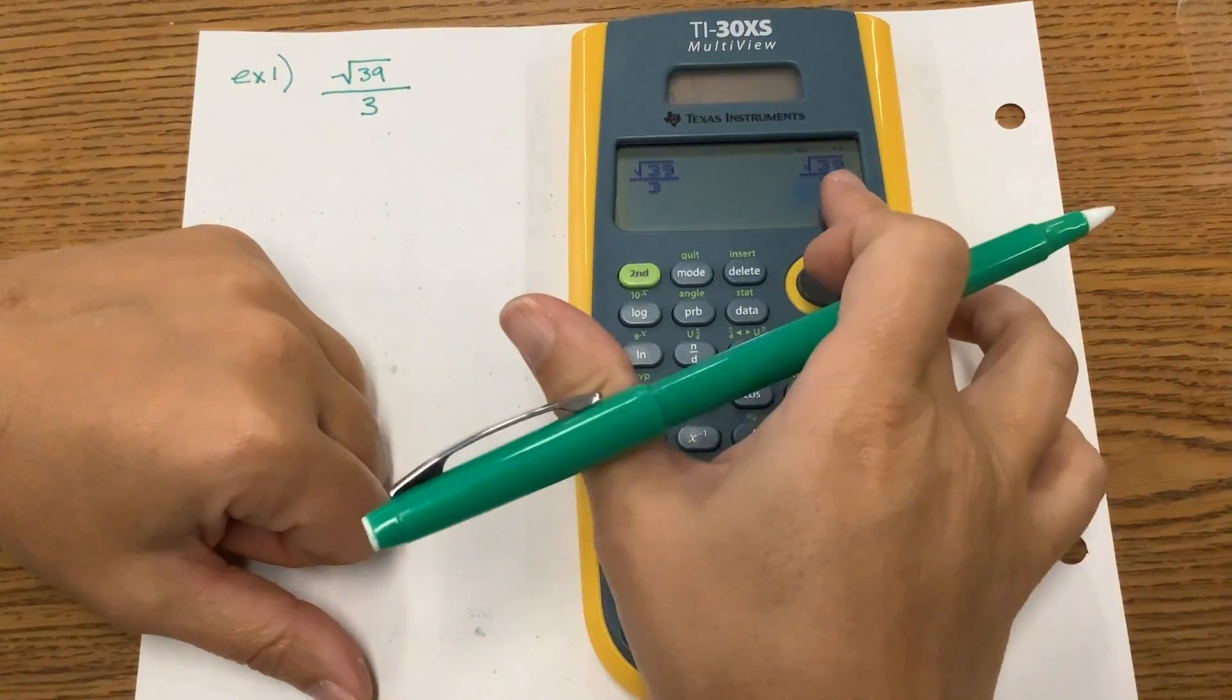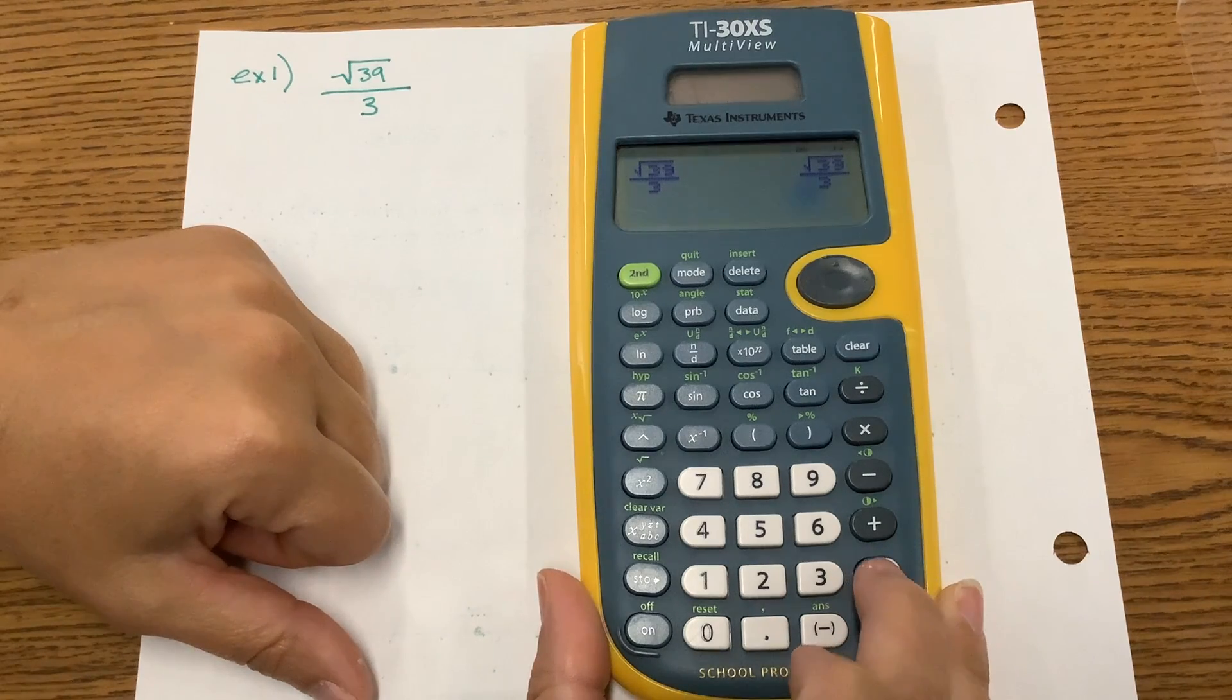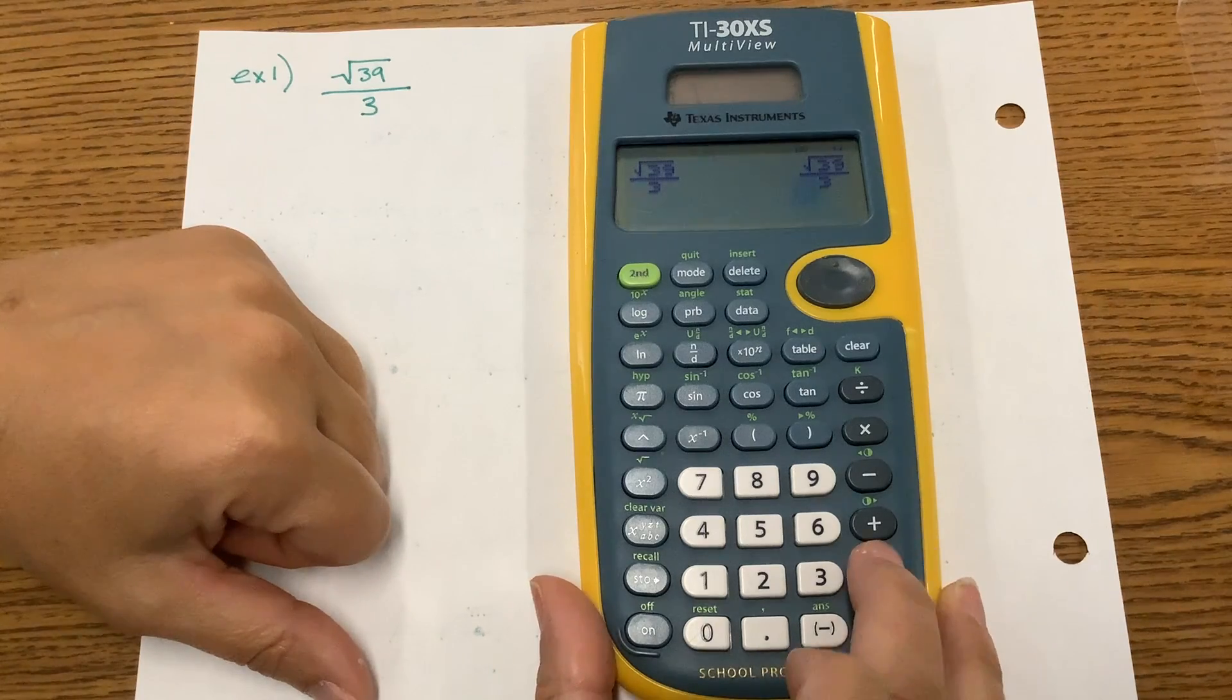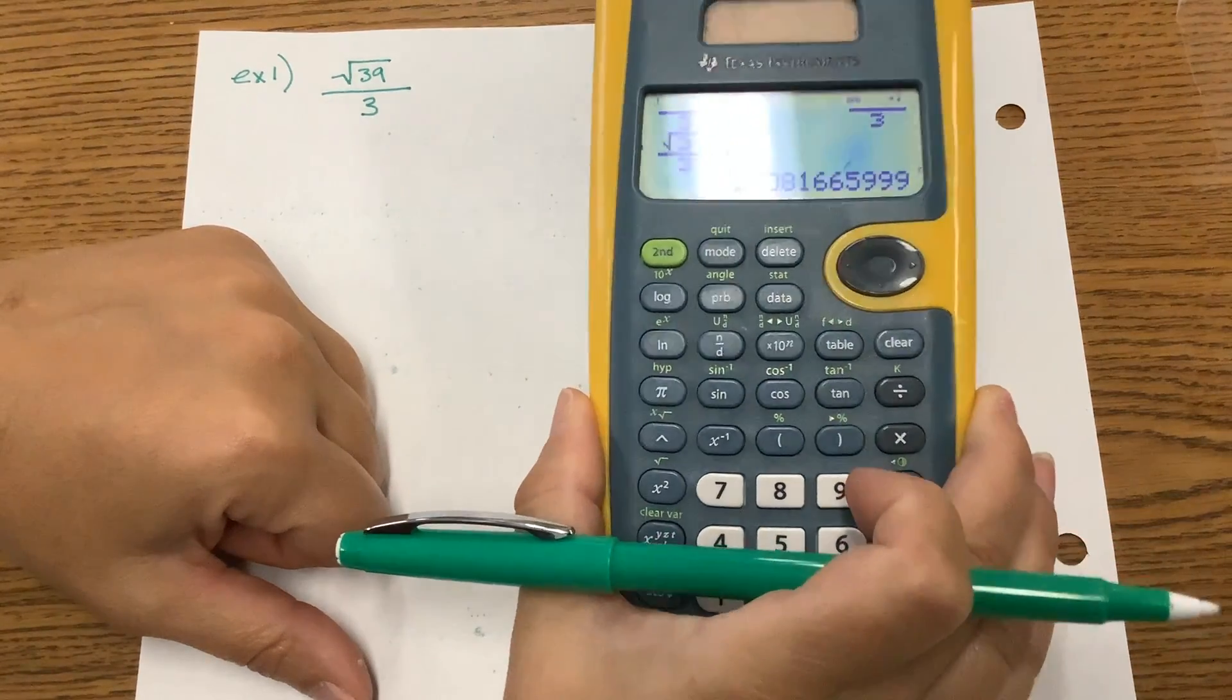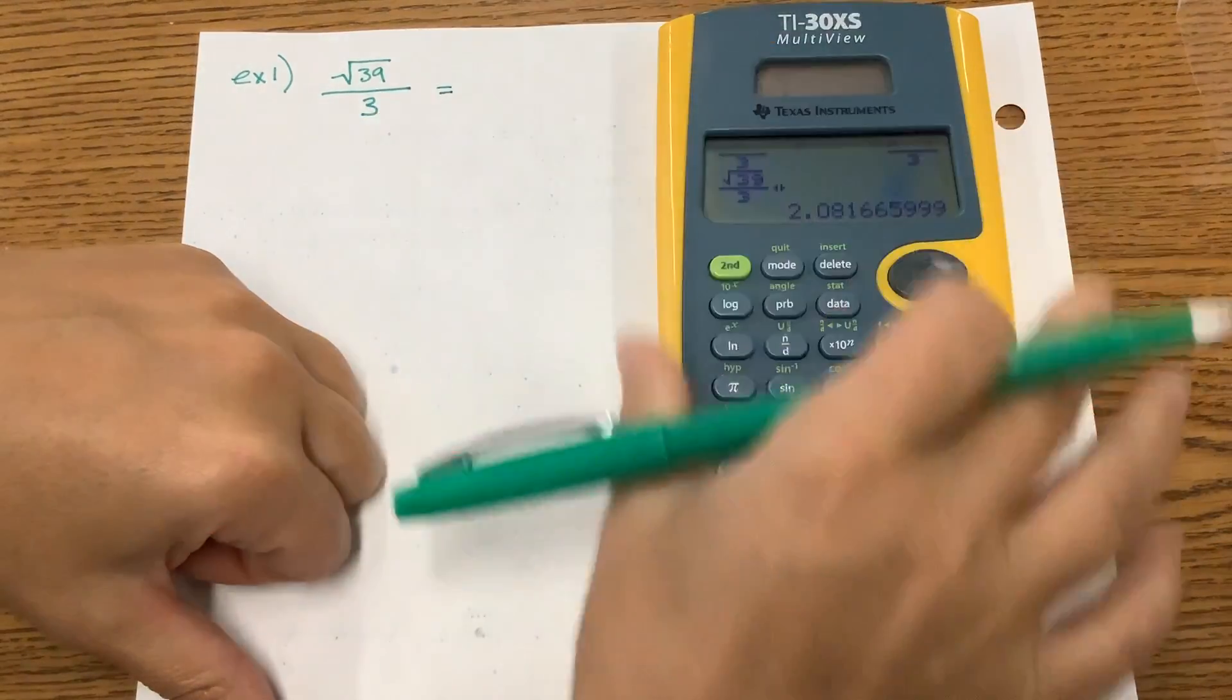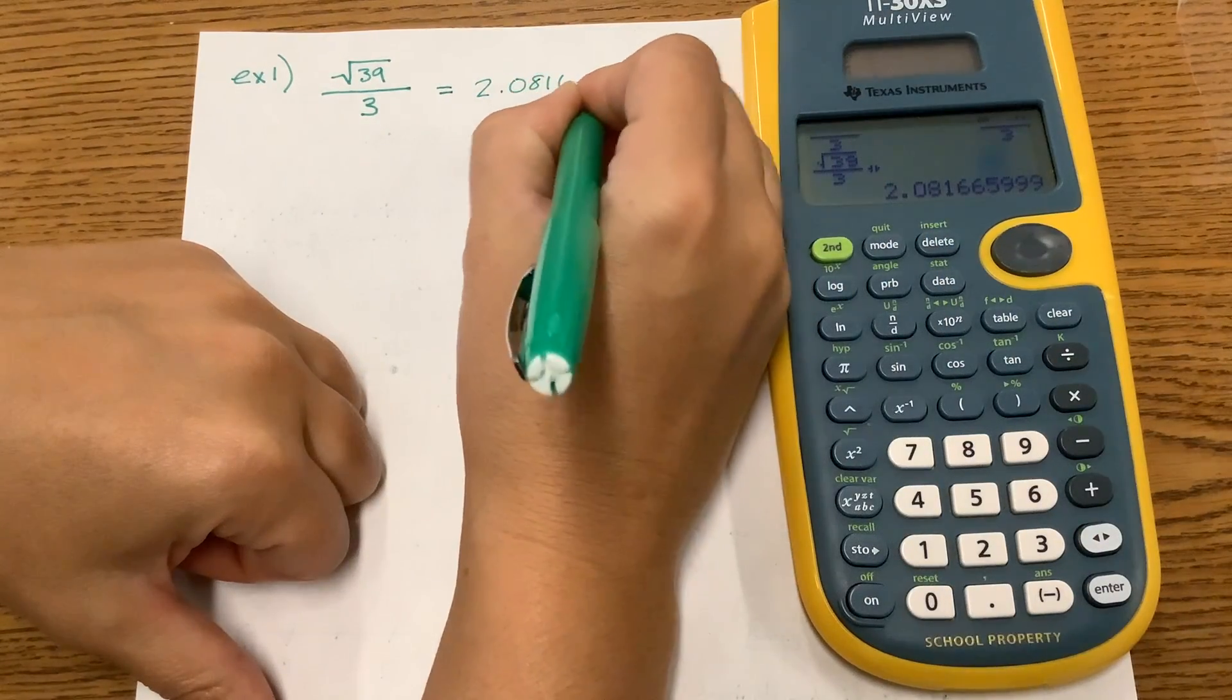You see it gives us the same thing back. What type of number is this? Irrational. Go ahead. Let's look at the decimal by pressing the double arrow key down here at the bottom. So the decimal is 2.0816, and it continues. So we're going to write equals 2.0816, and it continues.